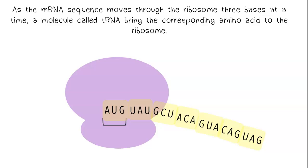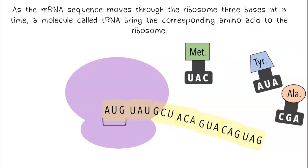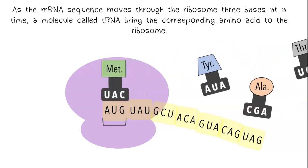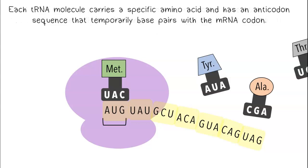As the mRNA sequence moves through the ribosome three bases at a time, a molecule called tRNA brings the corresponding amino acid to the ribosome. Each tRNA molecule carries a specific amino acid and has an anticodon sequence that temporarily base pairs with the mRNA codon.